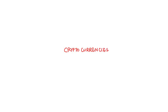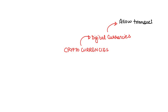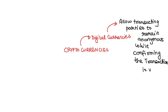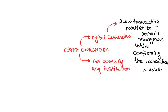When we talk about cryptocurrencies — these are digital currencies that allow transacting parties to remain anonymous while confirming the transactions they are undertaking. The transaction will be valid, but the identities of the parties will not be known. These cryptocurrencies are not owned or controlled by any institution — whether government or private.